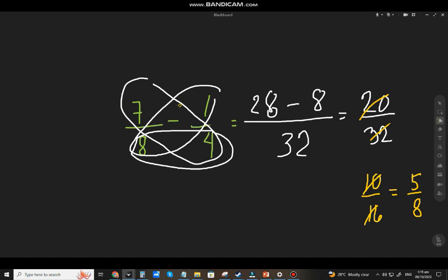Diba? So yung 7 eighths minus 1 fourth, that will be 5 over 8. Ganun lang siya kasimple. Right? So 7 times 4, 28, 20, 32. Correct.